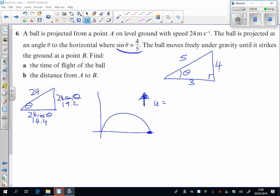we've got u is, we've just written that down there, 19.2. v, I don't know, a is minus 9.8, t, that's what I'm trying to find, and s, well this is interesting, isn't it? At this point here, the distance vertically is actually 0.